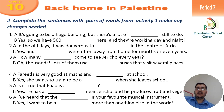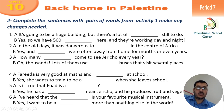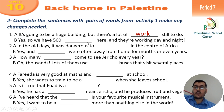Now complete the sentence with pairs of words from Activity 1. Make any necessary changes. Number one: It's going to be a huge building, but there is a lot of work still to do. Yes — so we have 500 here and they are going. They are walking day and night. Who are walking day and night? Workers.